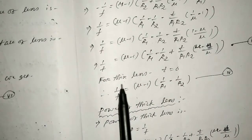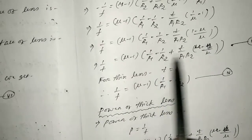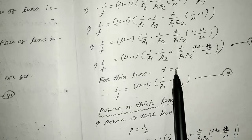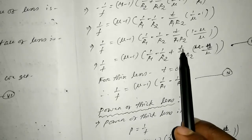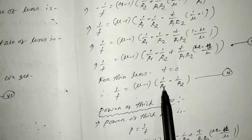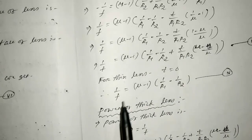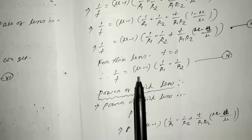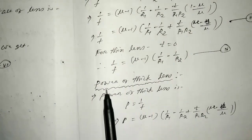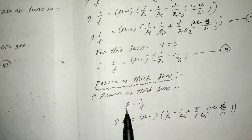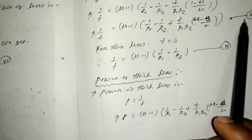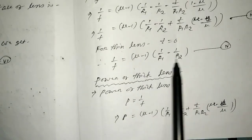Now for a thin lens, the thickness T equals zero. As a special case, putting T = 0 into equation 3, the last term vanishes and we get 1/F = (Nu - 1)(1/R1 - 1/R2), which is the standard thin lens maker's equation — equation 4.